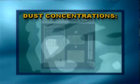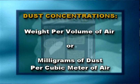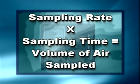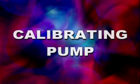The first step in sampling is calibration of the sampling pump. You must know the sampling rate and sampling time to determine the volume of air that passed through the filter. For our system, the sampling rate is 1.7 liters per minute. Dust concentrations are written in terms of weight per volume of air, or milligrams of dust per cubic meter of air. The sampling rate multiplied by the sampling time equals the volume of air sampled.